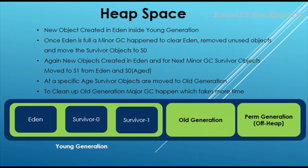Once objects are moved to old generation, Eden and survivor spaces are empty again, so all minor GCs will happen in young generation. These minor GCs take very little time because very few objects and very little memory are involved. Once the old generation itself gets full, a major GC will happen. Major GC will clean up old generation, and since the memory area is large and the number of objects is huge, it will take a lot of time, which can impact application performance.